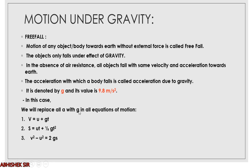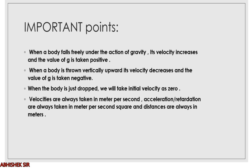If the object is falling freely, we replace a with g in the equations of motion and put the value 9.8 m/s². But remember, when the object is moving upward, instead of g you put −g, because gravity acts downward — against the upward motion. When a body falls under gravity, velocity increases so g is positive. When the body is thrown vertically upward, velocity decreases so g is taken negative. When the body is just dropped, initial velocity is taken as zero.